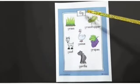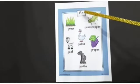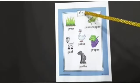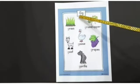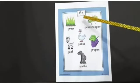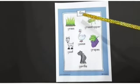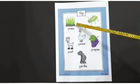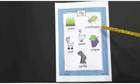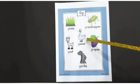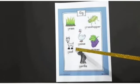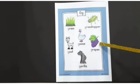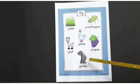Alphabet G. Capital G, small g. G says G. G for grass, G for grasshopper, G for goose, G for goat, G for grapes, G for gorilla.